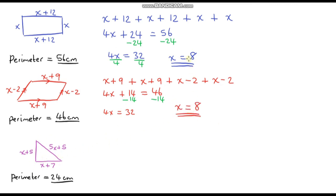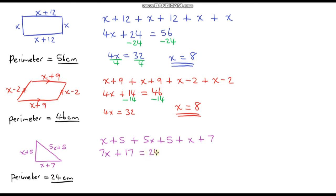For the last one, let's add up all of the terms: x plus 5 plus 5x plus 5 plus x plus 7. Simplifying: x plus 5x is 6x, plus another x gives 7x. For the numbers: 5 plus 5 is 10, plus 7 is 17 — so plus 17. That equals 24. Taking away 17 from both sides: 7x equals 24 minus 17, which is 7. Dividing both sides by 7 gives x equals 1. So it wasn't 8 this time.